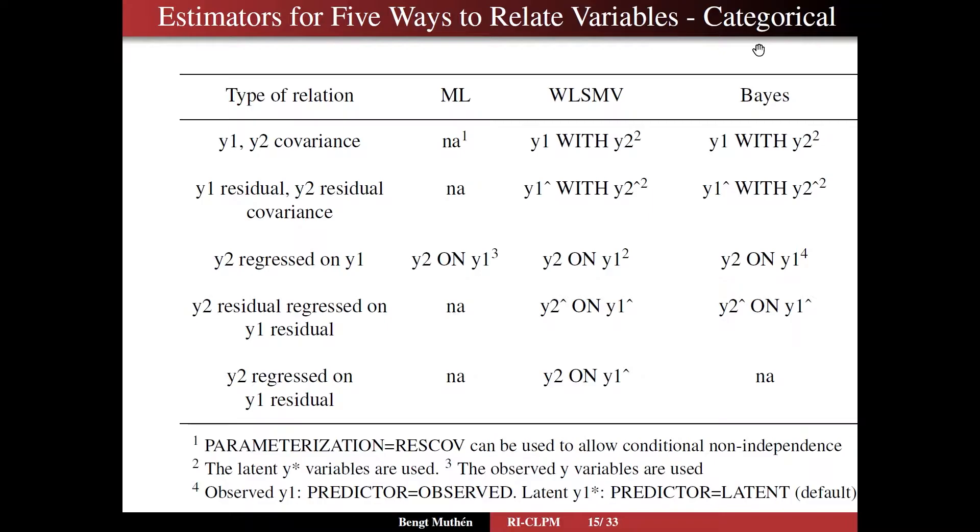And that will be covered more in detail in part two of WebTalk 4. The y1, y2 covariance is not available in maximum likelihood, as you may remember from Mplus use. There is no with statement available. For example, categorical variables with continuous latent variables calls for numerical integration. And to get a residual covariance between two y variables, you have to introduce a factor.